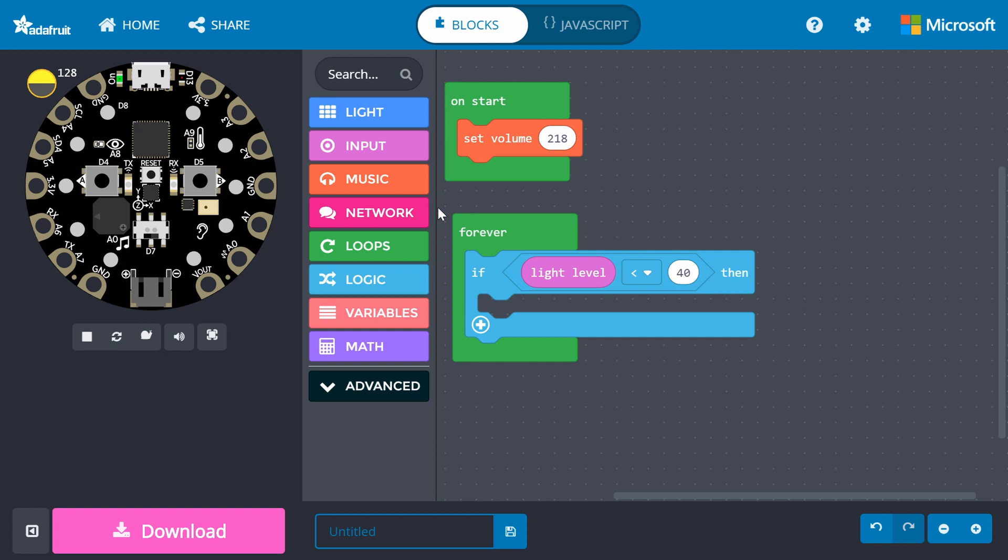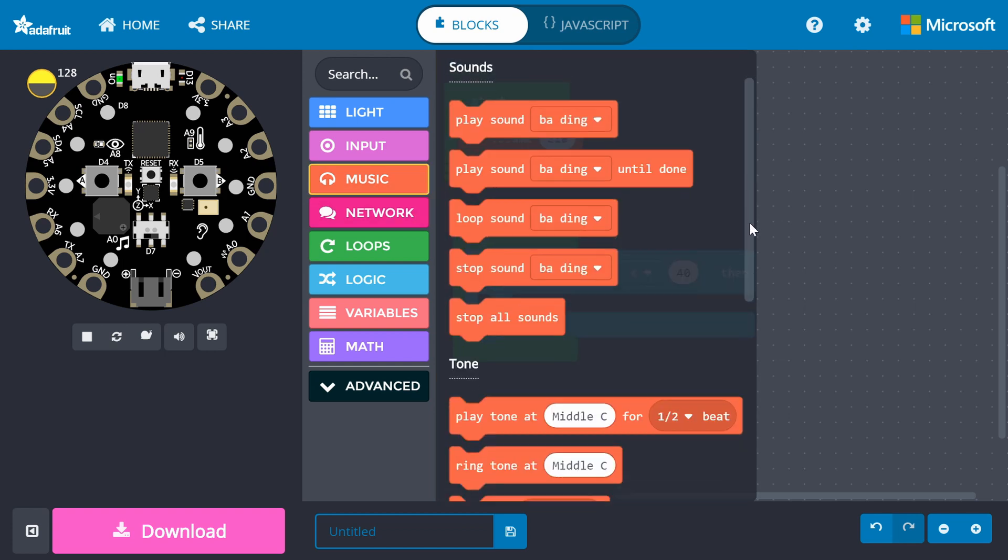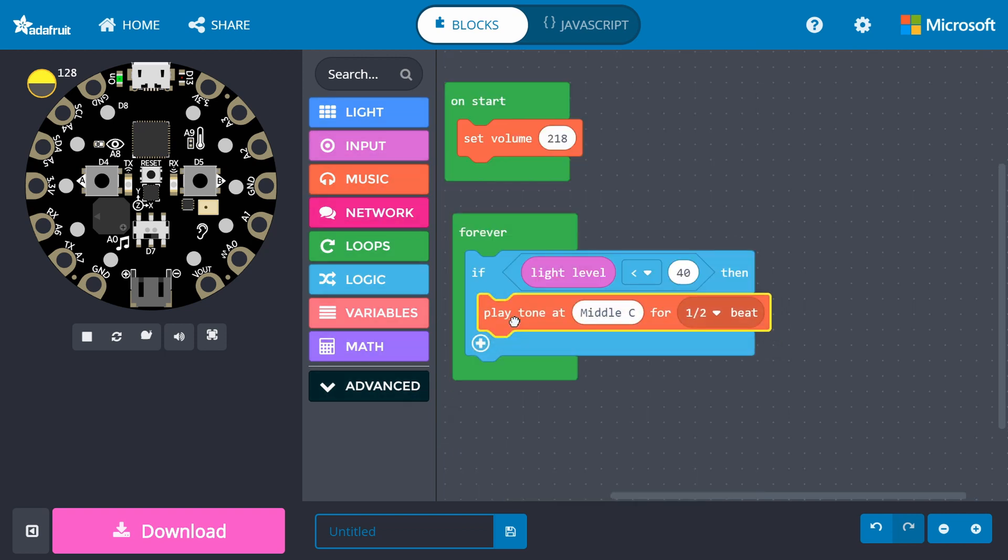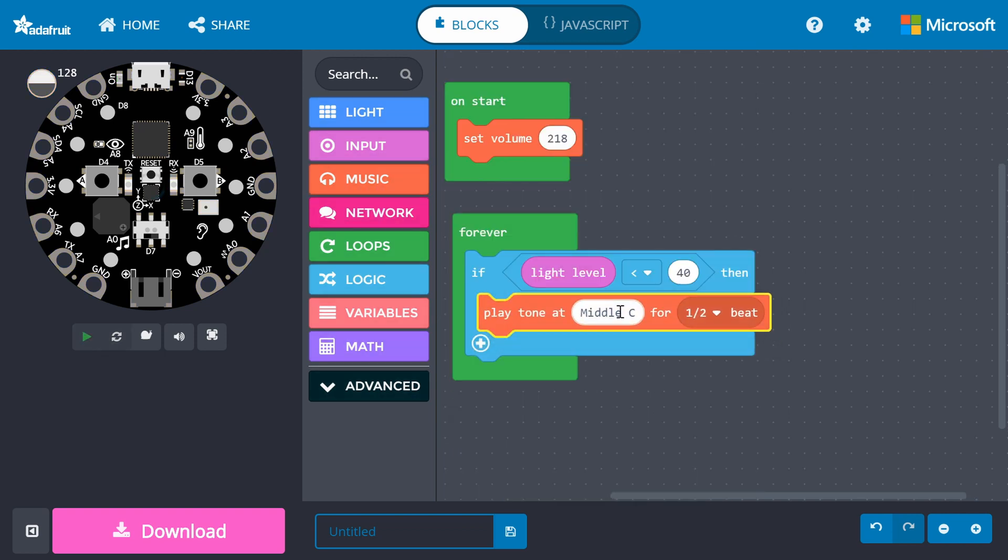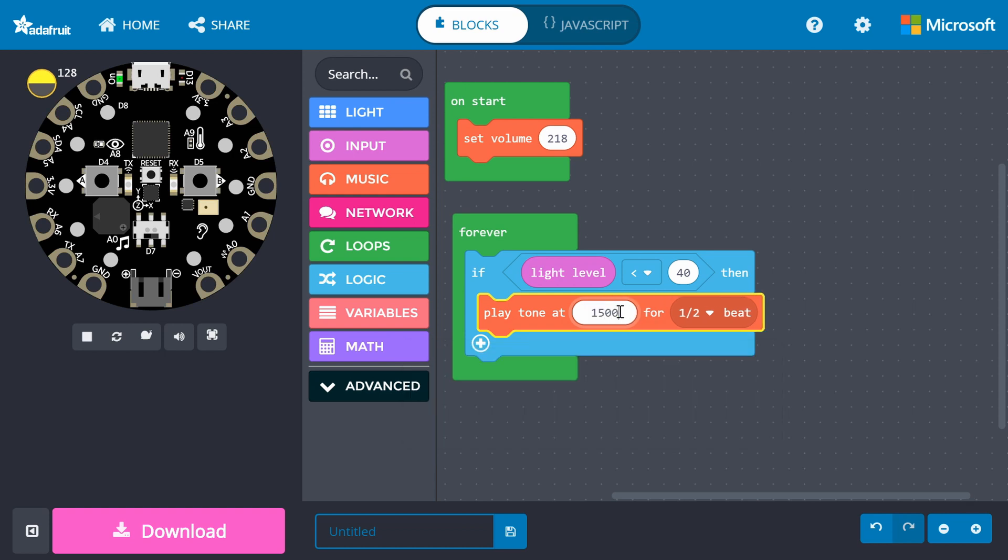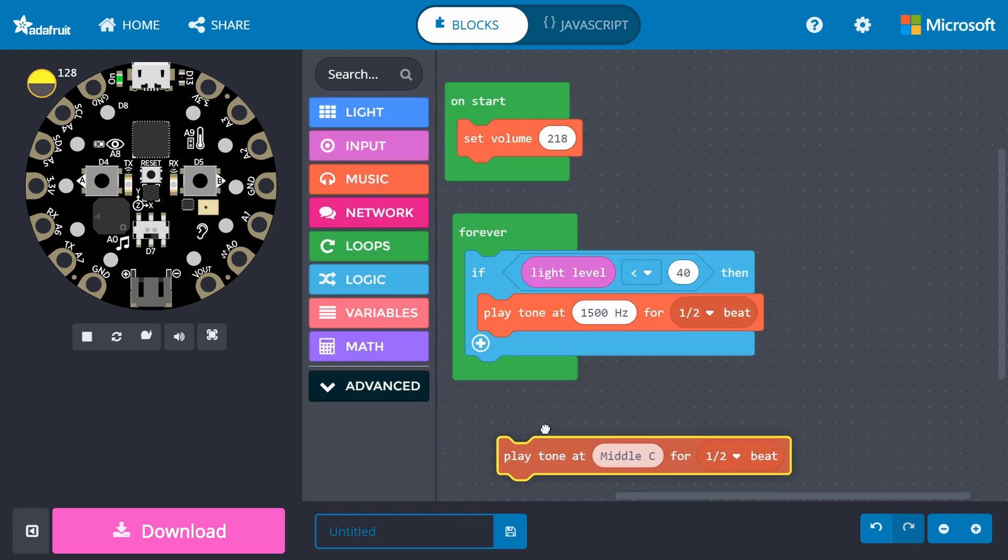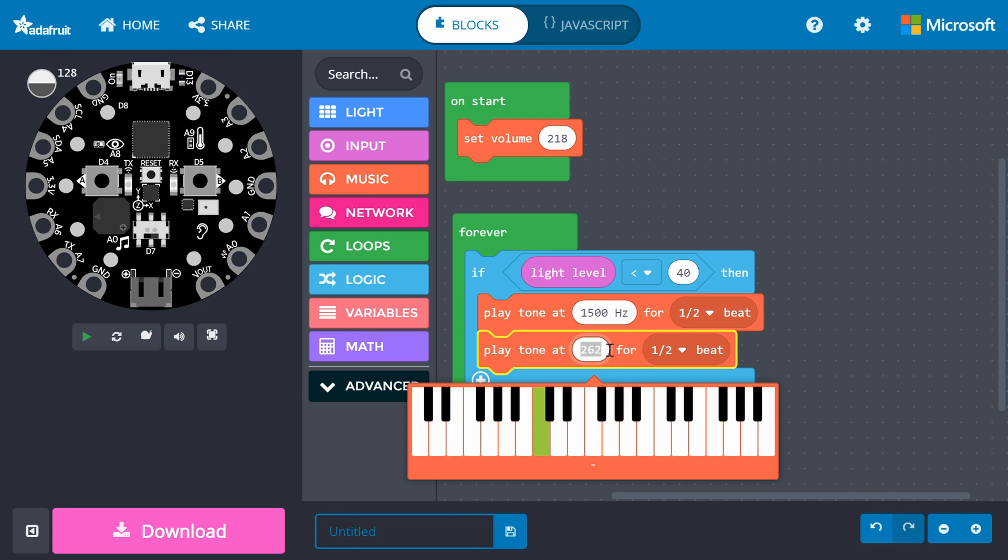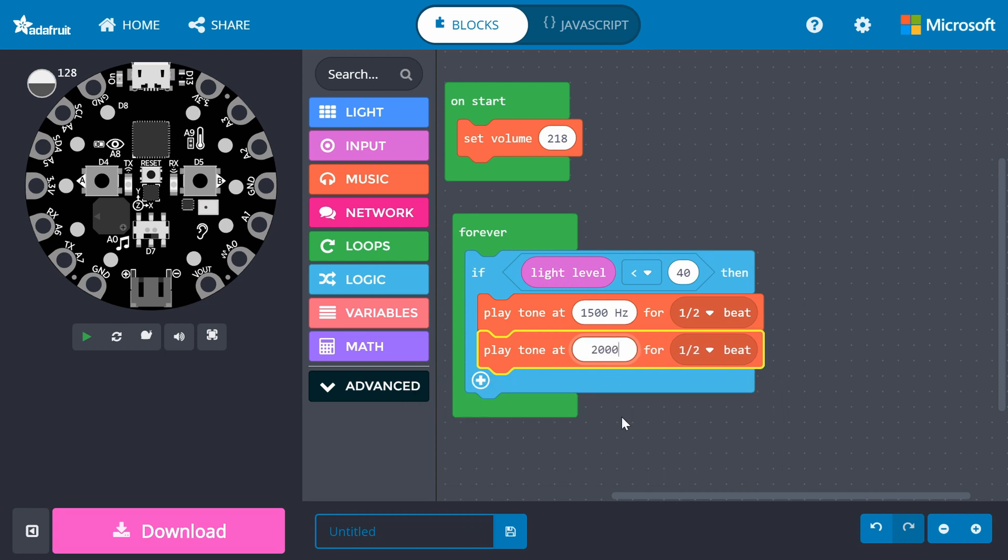From music, grab a play tone block and put it under the if statement. We don't want a pleasing sound here. We need it to be a screeching, terrible noise, so change the note to 1500 hertz. Leave the timing to one half beat. Add another play tone block under that one. Change the note to 2000 hertz. This should give us a high-low siren noise.